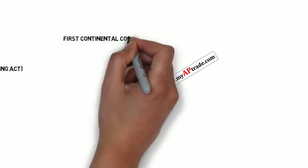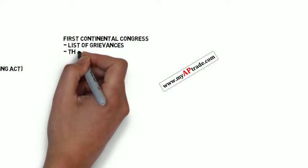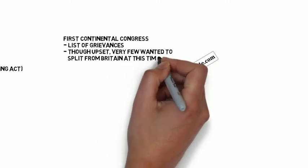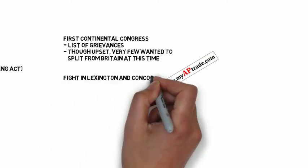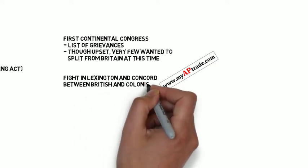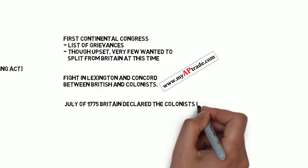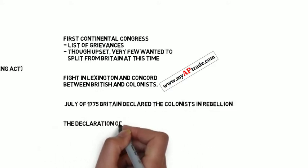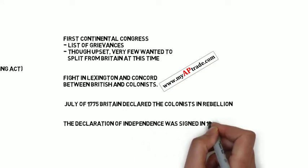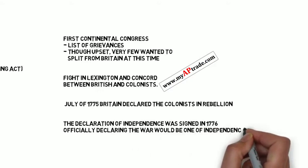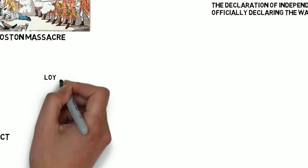Now let's discuss the road to independence. The First Continental Congress was called to make a list of grievances — things they were upset with because of Britain. Although people were irritated with the numerous acts, very few actually wanted to split from Britain during the First Continental Congress. Before the Second Continental Congress could even meet, a fight broke out in Lexington and Concord between the British and colonists. By July of 1775, Britain declared the colonists to be in rebellion and the war was initiated. The Declaration of Independence was signed in 1776, officially declaring the war would be one of independence.